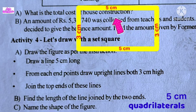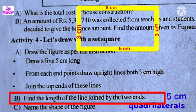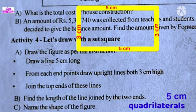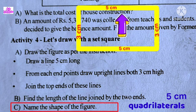Find the length of the line joined by the two ends. The length is 3cm. Name the shape of the figure formed.